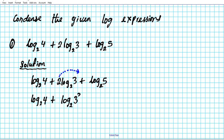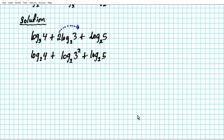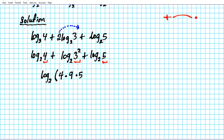Now we are ready to condense using the product property of logarithms. Whenever you have the sum of logs, it converts to the product of the logarithmic arguments. The arguments are 4, 3 squared (which is 9), and 5. So we get log base 2 of 4 times 9 times 5. Multiplying: 4 times 5 is 20, times 9 is 180. The final answer is log base 2 of 180.